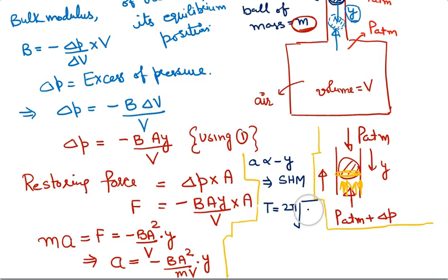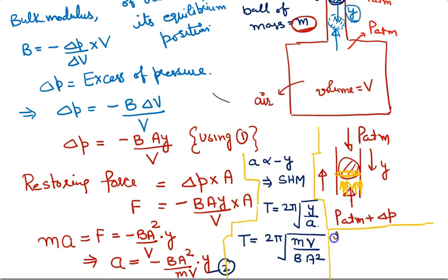This means that this ball will execute SHM and hence its time period, from our standard equation we have done so many times, T is equal to 2π under root of Y upon A. We can substitute value of Y upon A from equation number 2. We will ignore negative sign because negative sign just represents direction of acceleration, that is acceleration is opposite to displacement. Ignoring negative sign and substituting value of Y upon A from equation number 2, we will get time period is MV upon BA square.